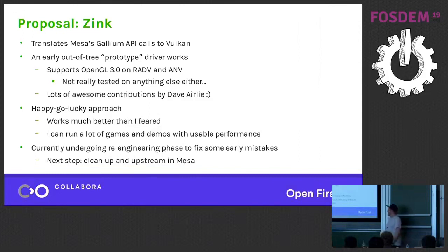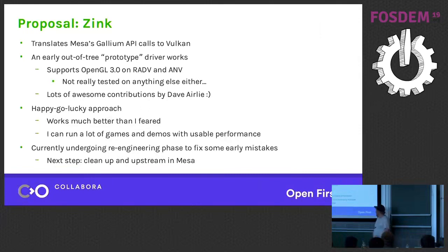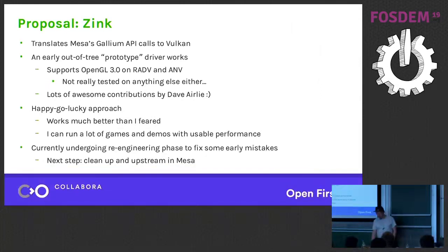The driver is written in a pretty naive happy-go-lucky approach to see what could possibly go wrong, and it turns out it works a lot better than I feared. I can run a lot of games and other demo applications with pretty usable performance. I'm not going to talk much about performance since we haven't focused on that, but for some simple benchmarks I get roughly half of what i965 provides — and that's with some not-great stalls we're doing to placate the windowing system. Currently I'm taking a step back and re-engineering it a bit, because a bunch of early design decisions turned out to be mistakes. I'm trying to build a smaller feature version that I can upstream in Mesa and then build more features on top.